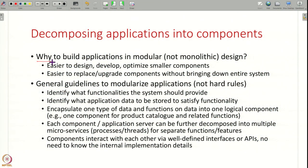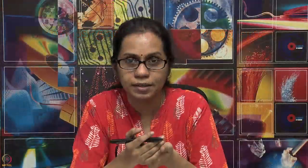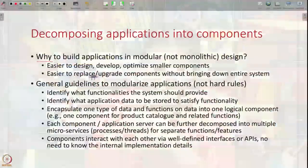Before answering how, let us answer the why. Why do you need to build an application in a modular fashion? It is in general easier to design, develop, and optimize when you have many smaller components. Each component can be built independently, tested independently, and optimized for performance and reliability independently, and then you put all of these together. That is easier than writing a million lines of code in one program. It is also easier to maintain a system — as your system runs, some components may need replacement, upgrading, or something may fail. All of this is easier when your system has multiple components instead of everything in one big file.